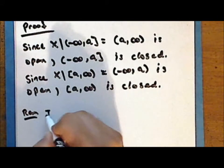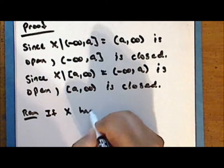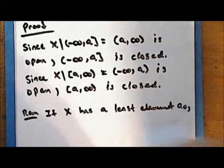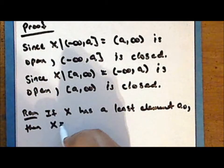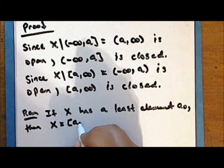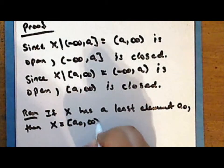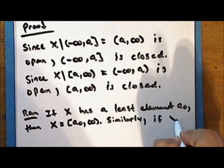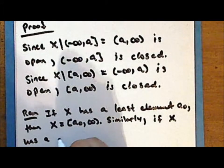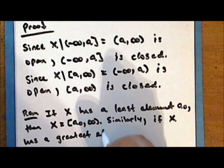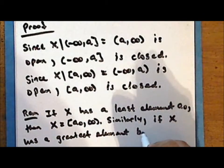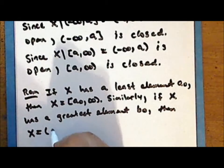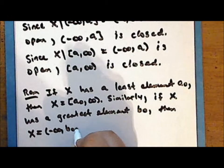Notice that if the underlying set X has a least element, which we'll call a sub-naught, then the entire set X can be represented as the half-open ray from and including a sub-naught to positive infinity. Similarly, if the underlying set X has a greatest element, which we'll call b sub-naught, then the entire set can be represented as the half-open ray from negative infinity to b sub-naught, inclusive of b sub-naught.